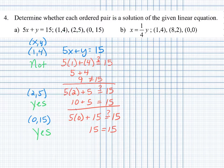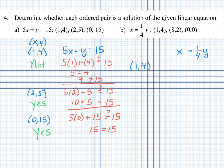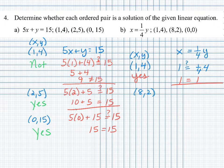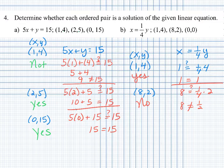For part B, we are looking at the equation x equals one-fourth of y. Let's check our first point (1, 4): replacing x with 1, does 1 equal one-fourth of 4? Yes, one-fourth of 4 is 1, so that is a solution. Let's check (8, 2): does 8 equal one-fourth of 2? One-fourth of 2 is one-half, and 8 does not equal one-half, so that is not a solution.